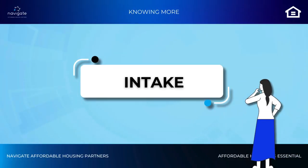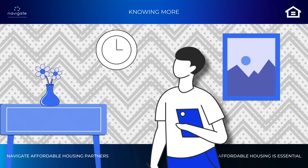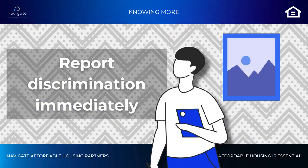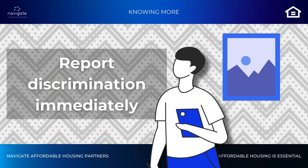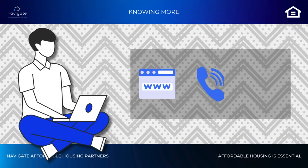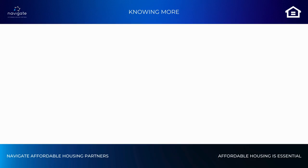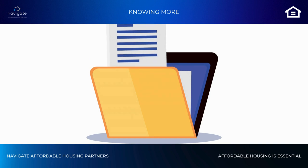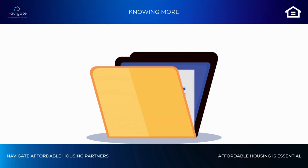Step 1: Intake. If you suspect discrimination, report it to HUD immediately. You can file online, by phone, or email. Your report will be reviewed to see if it can be formally filed under the laws HUD enforces.